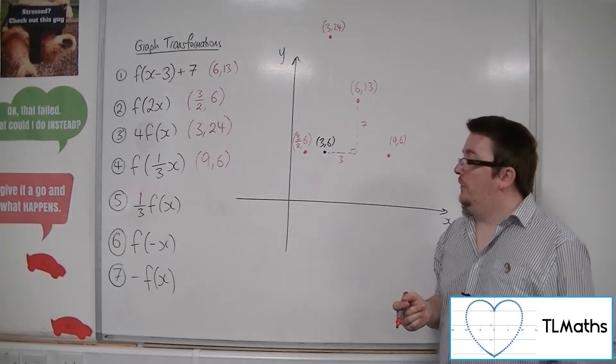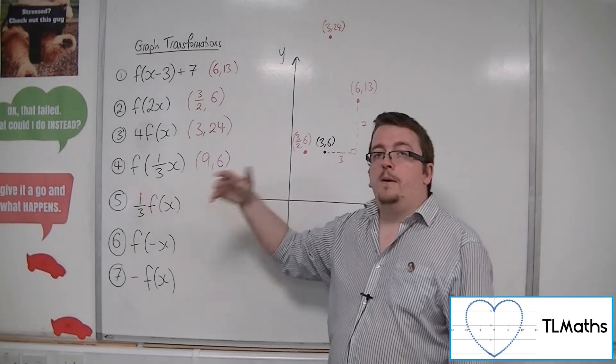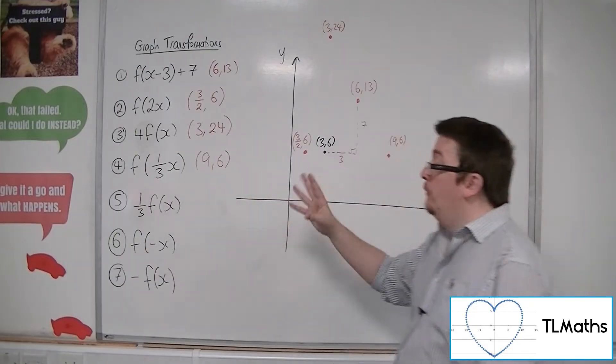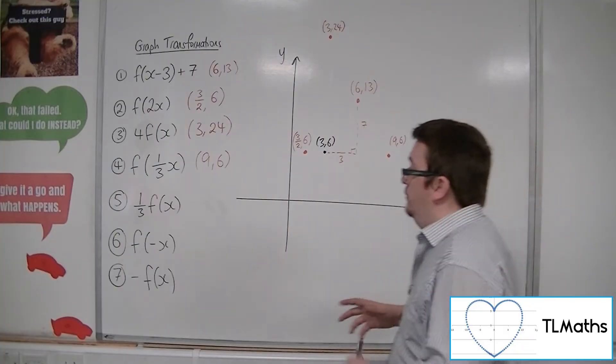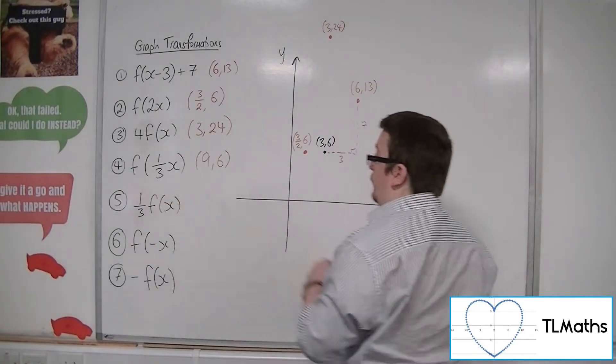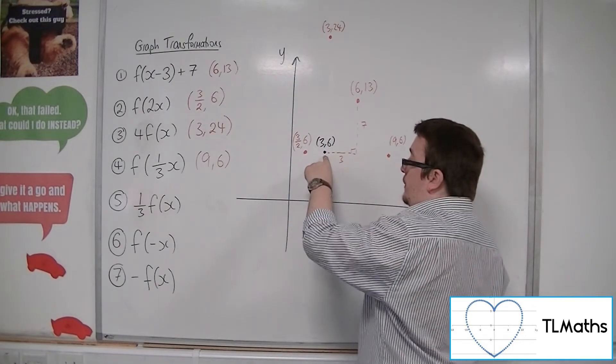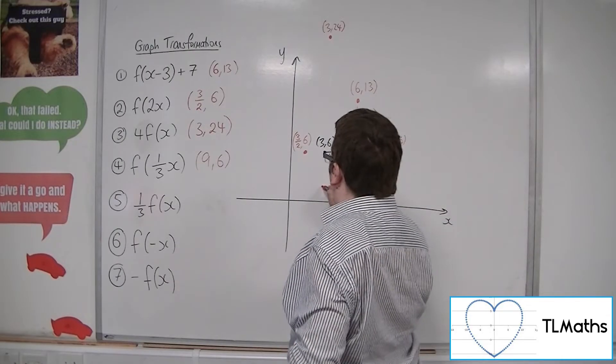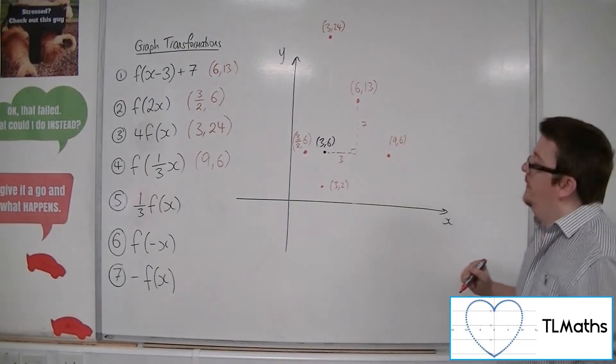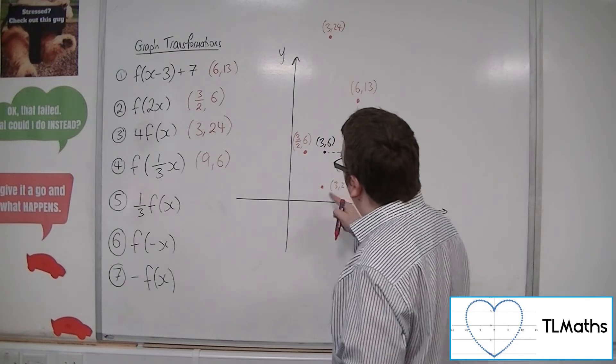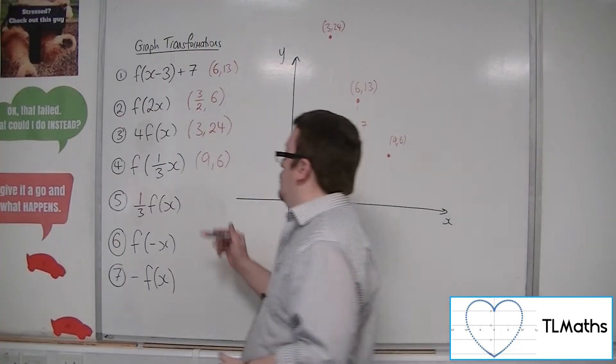1/3 f(x), well, that is a stretch parallel to the y-axis, factor 1/3. Because outside it maintains as it is, as the factor. So we want to be a third as far away from the x-axis as we actually are here. So that would be down to 3, 2. The y coordinate gets a third of it. I don't want to invent the word thirded, but that's effectively what's happened. The x coordinate maintains the same. The y coordinate is a third of what it originally was. So that would be 3, 2.